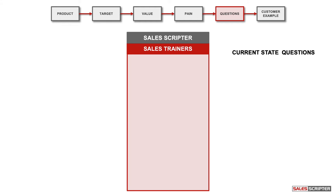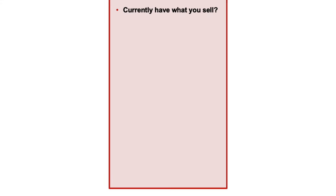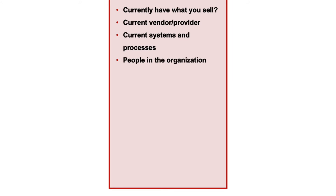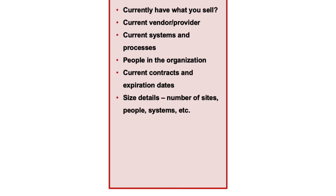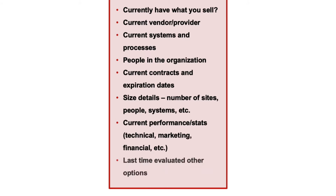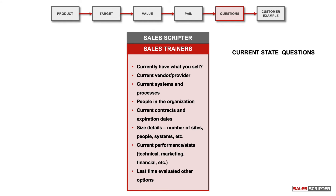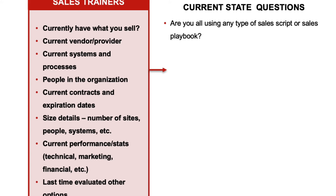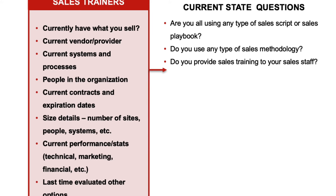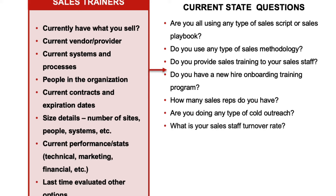I've created a list of areas you might want to think about when creating current state questions: ask if the prospect currently has what you sell, who they're currently buying from, any details around their current systems or processes, people in the organization, current contracts or expiration dates, sizing details, performance details, or when they last looked at purchasing what you sell. Here are current state questions for SalesScripter: Are you currently using any type of sales script or playbook? Do you use any sales methodology? Do you provide sales training or new hire onboarding? How many sales reps do you have? Are you doing any cold outreach? What is your sales staff turnover rate? How long does it take to get reps ramped up? When was the last time you looked at improving your sales training?